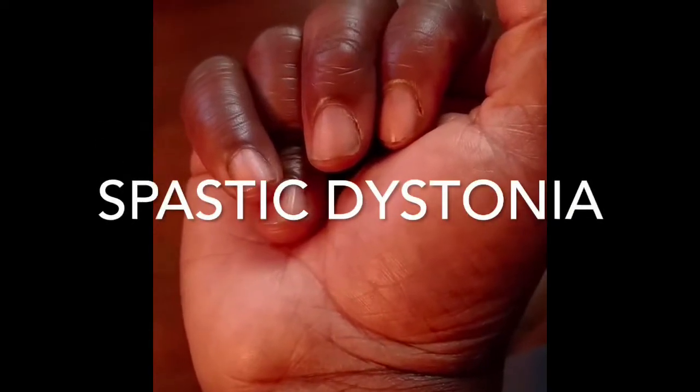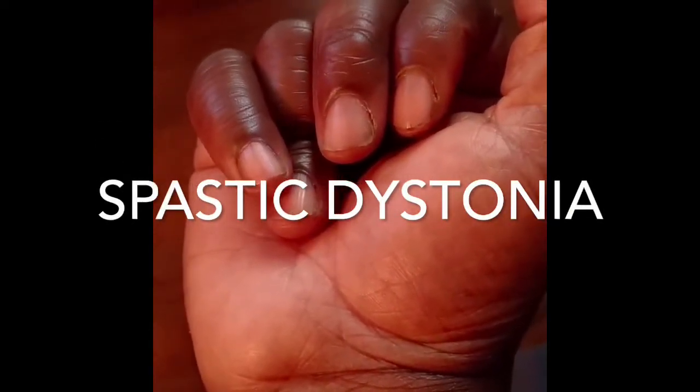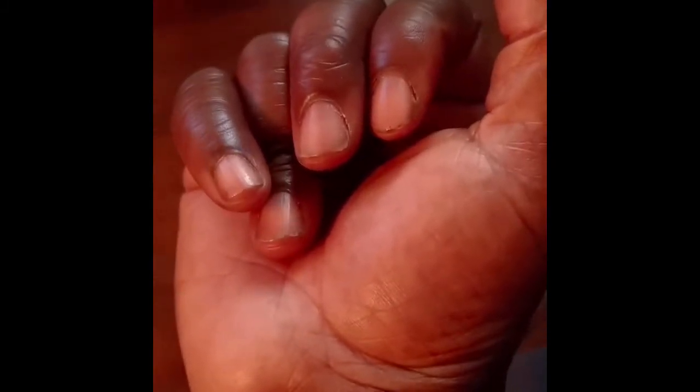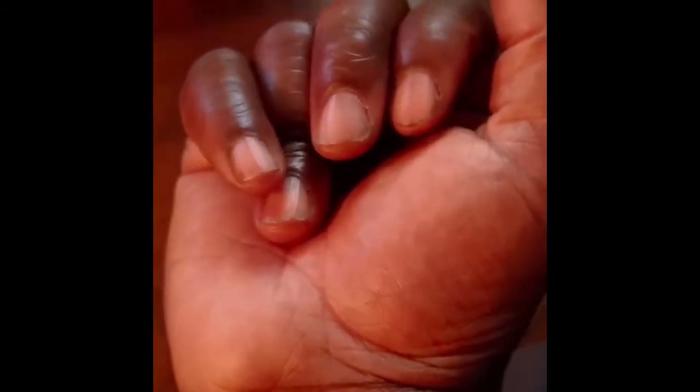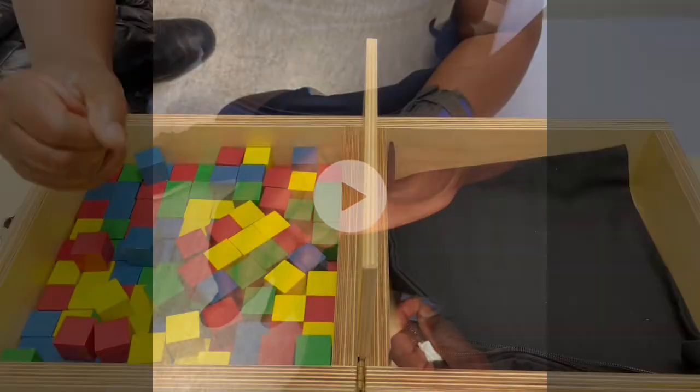Spastic dystonia is a very complex presentation of spasticity complicated by involuntary, changeable, and unwanted spastic movements. He's trying to open his hand but he's caught in a dystonic movement. Sometimes the hand pops open but he can't really control it at will. Other times his hand will spontaneously grab something but it quickly closes into a fist.